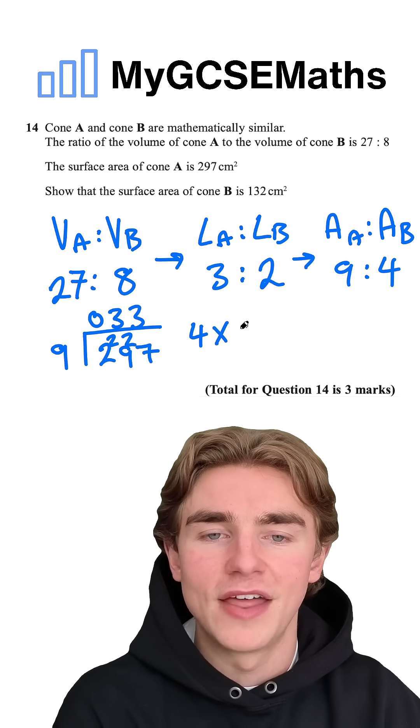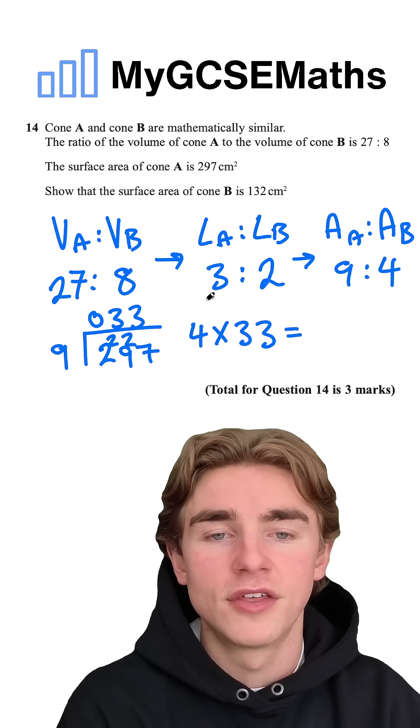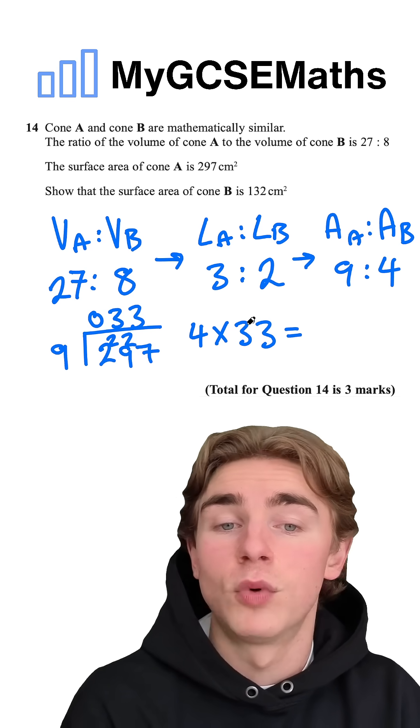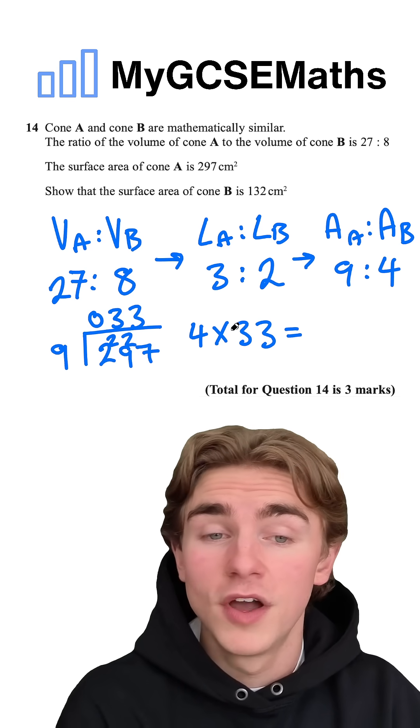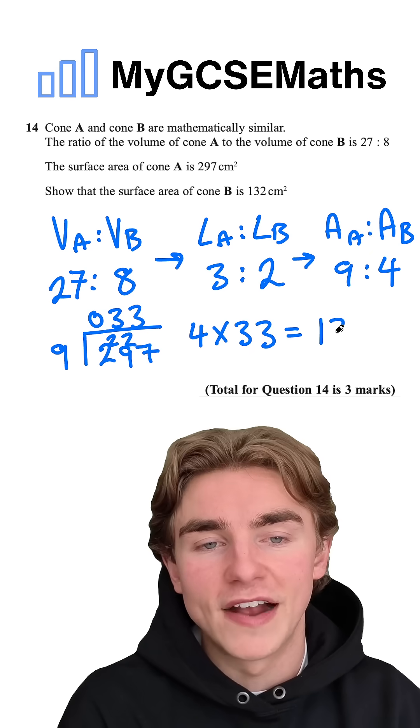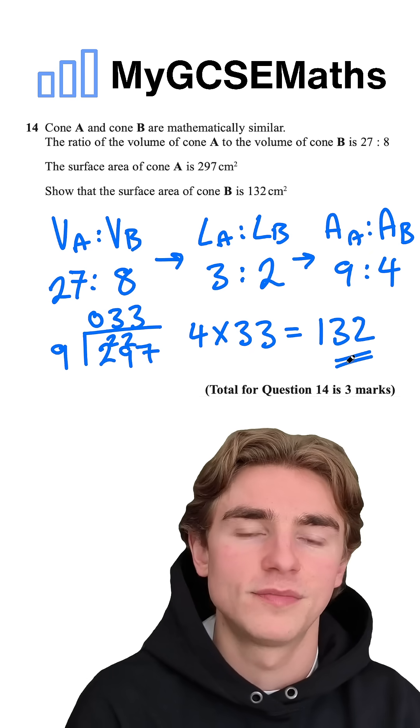Next, we can do 4 times by 33, which if we're correct, should be 132. 4 times 30 is 120, 4 times 3 is 12, and 120 plus 12 is in fact 132. So we know we must be right there.